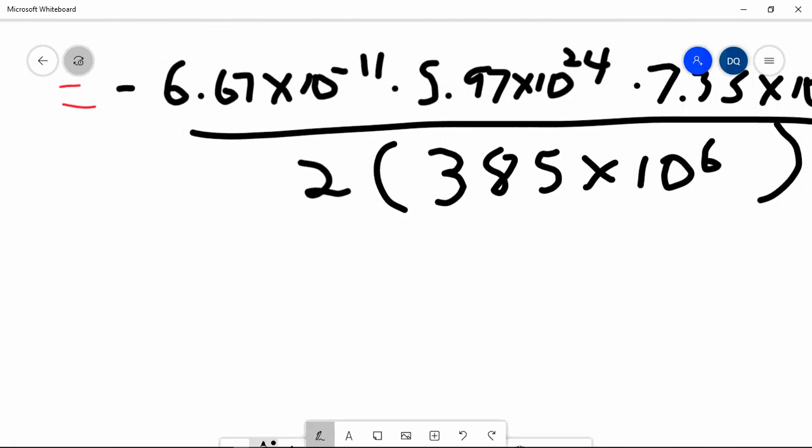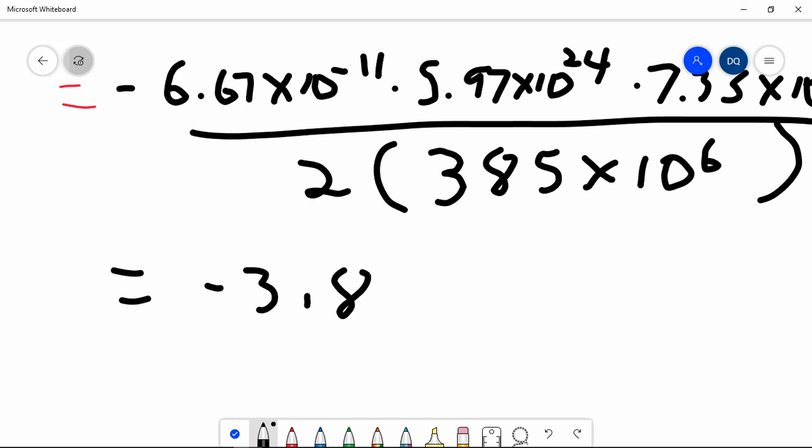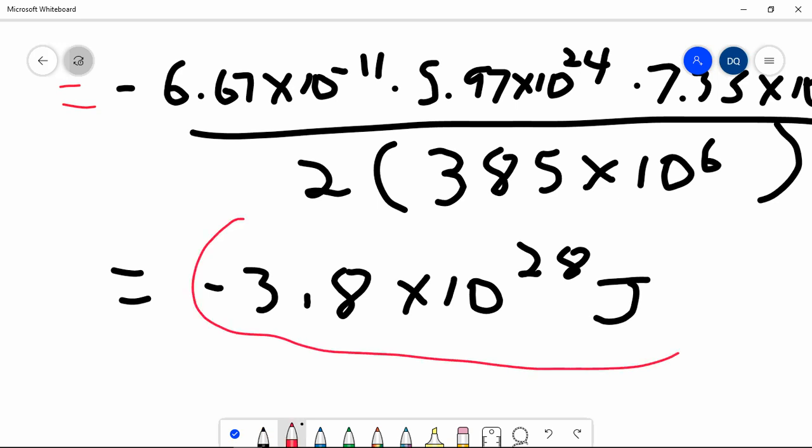And then run all of that through your calculator. And you should get negative 3.8 times 10 to the 28 joules. That's the total mechanical energy of the moon in orbit.